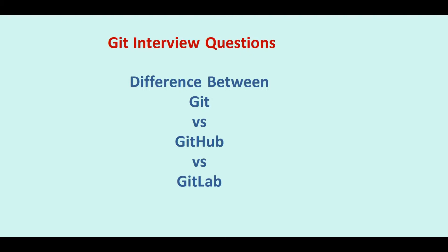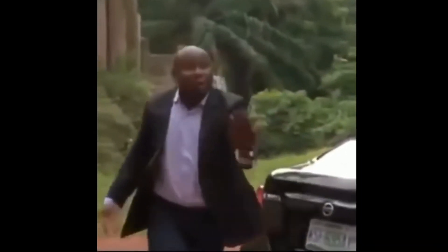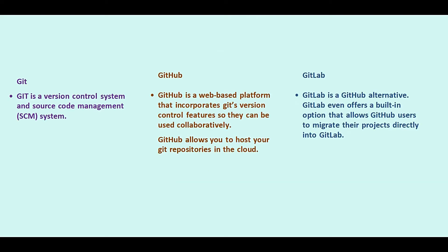In this video we are going to see the difference between Git, GitHub, and GitLab. Git is a version control system and also a source code management system, whereas GitHub is a web-based platform that incorporates Git's version control features so they can be used collaboratively. Basically, GitHub allows you to host your Git repositories in the cloud.